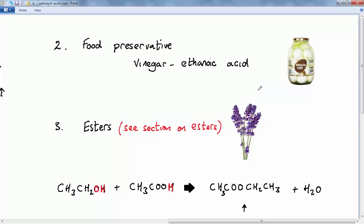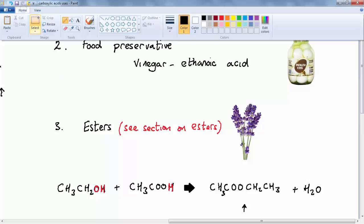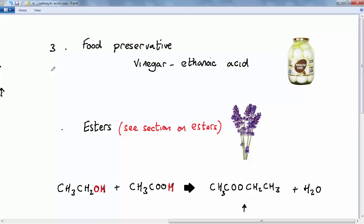So the ethanoic acid helps to kill bacteria. Now the next, actually that should be number three in our description of uses. And number four carboxylic acids are used to produce esters which we will look much more closely when we look at esters on their own.